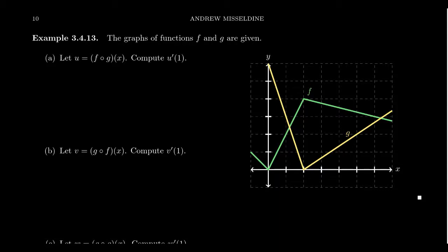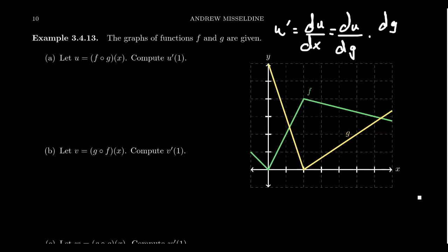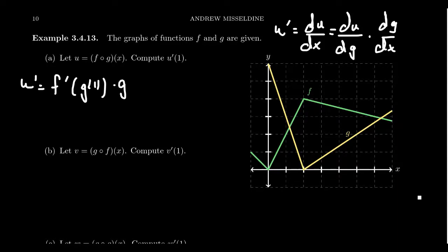Because if we're trying to compute u prime at one, what we need to do is find u prime, which is an abbreviation for du/dx. And the chain rule tells us that du/dx equals du/dg times dg/dx, where g is this inner function. So in other words, if we want to compute u prime, this is going to equal the derivative of f evaluated at g of one, times g prime at one.